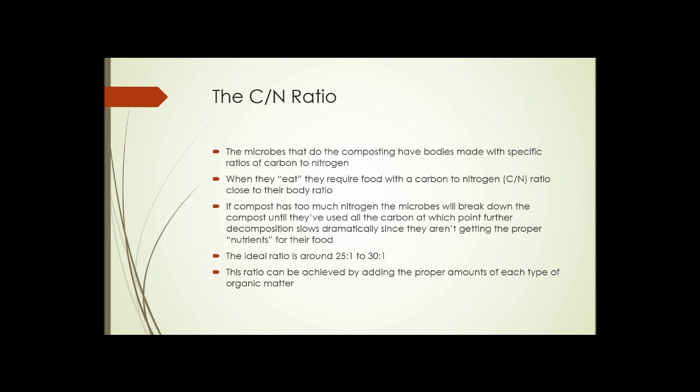Now, an ideal ratio of carbon to nitrogen is 25 to 1 to 30 to 1. That doesn't mean that you need 25 parts of brown to 25 parts of green. This ratio can be achieved by using the proper amounts of each type of organic matter.